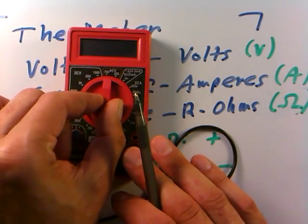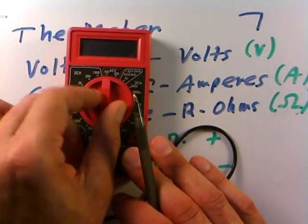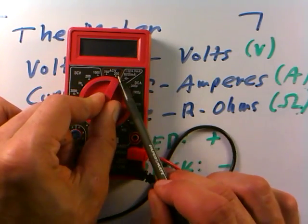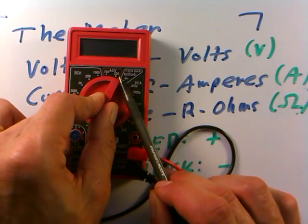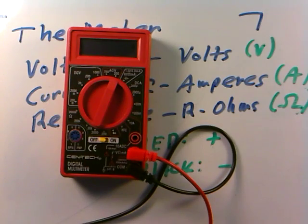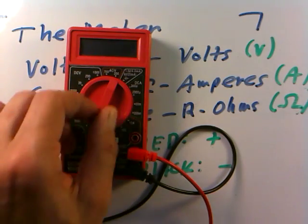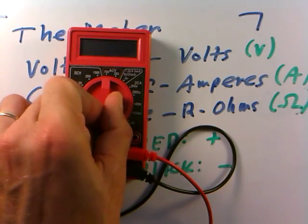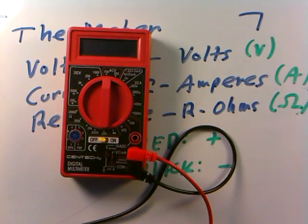This has two maximum scale settings, 200 and 750. The 200 is a good scale for doing a lot of household AC voltage measurements in the United States, which is always at about 110 or 120 volts. If you went to Europe and tried to make the measurements, you'd have to go up to 750 because the AC voltages in houses in Europe are up to 220 volts.